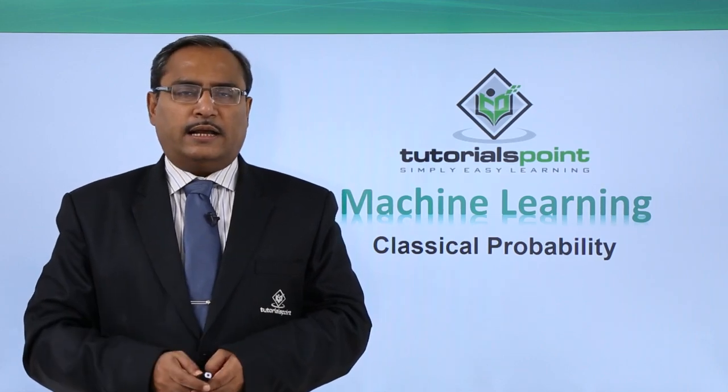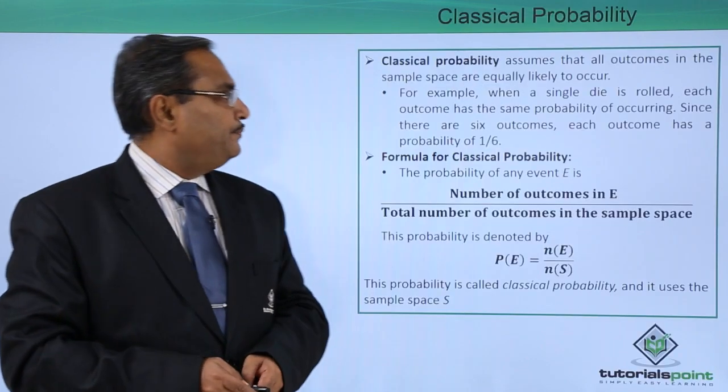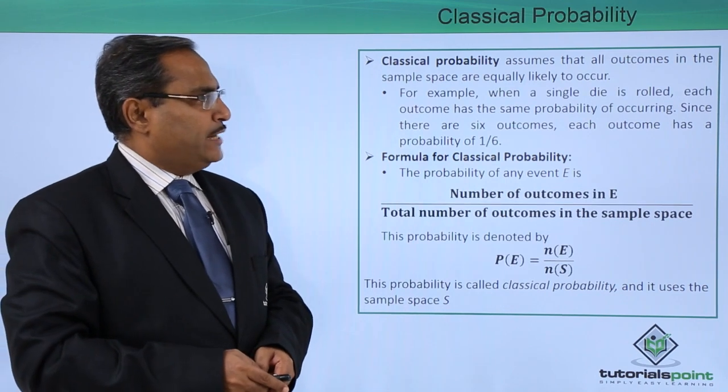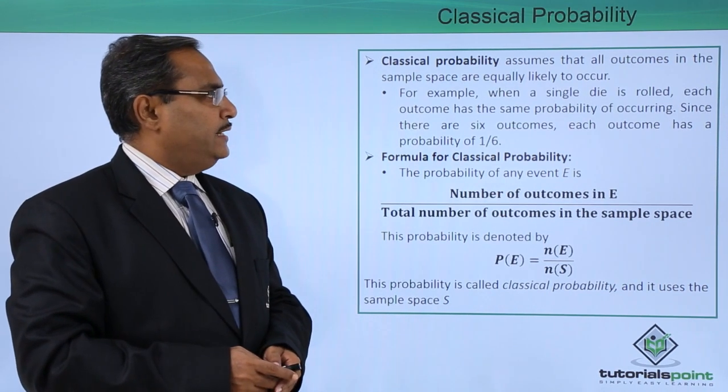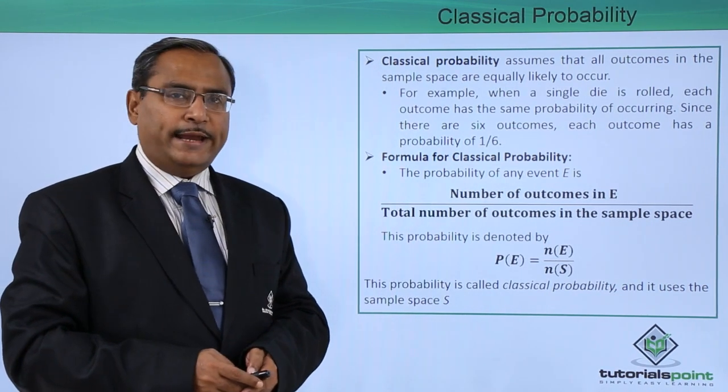In this video, we are discussing classical probability. Classical probability assumes that all outcomes in the sample space are equally likely to occur.